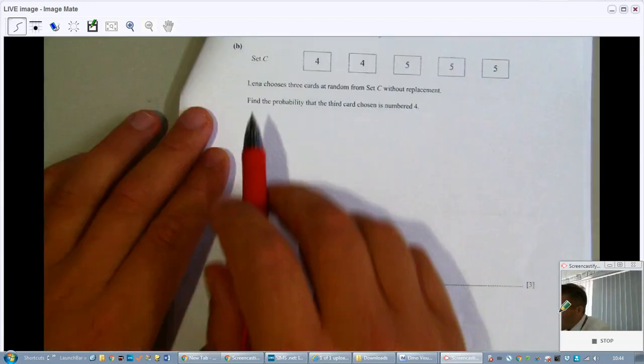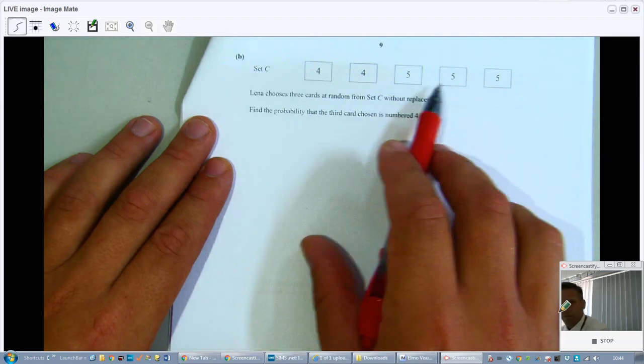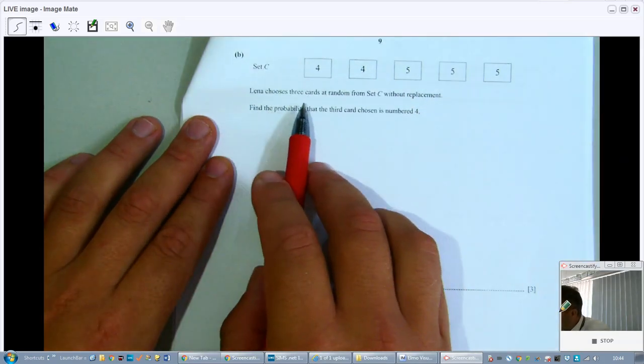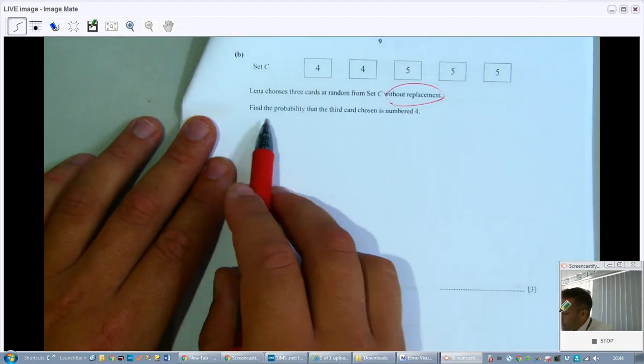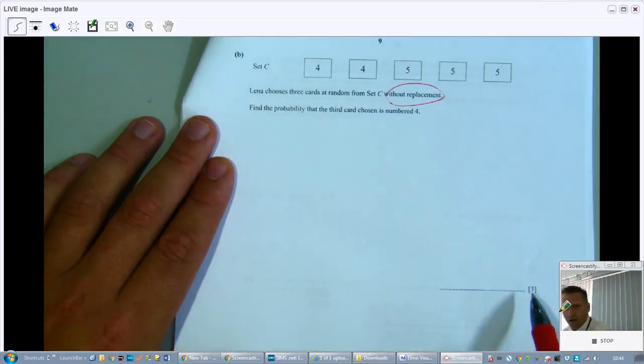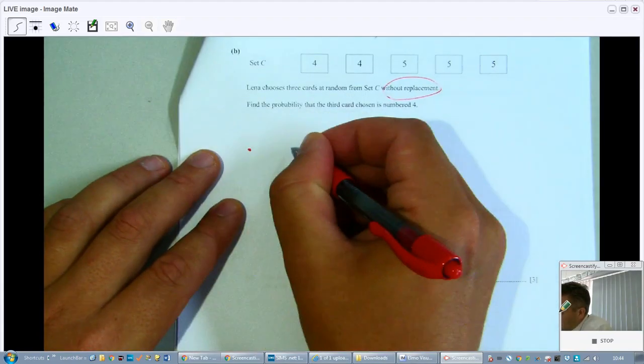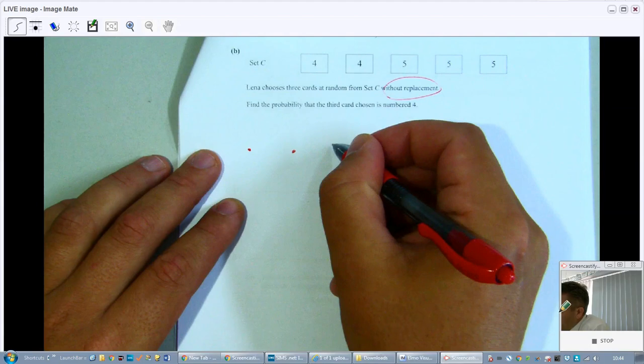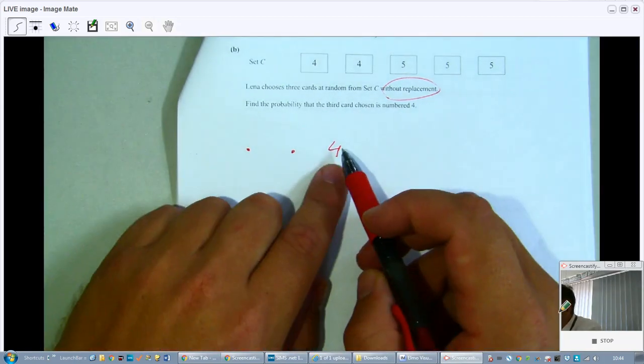So let's continue. We have a new set C with different cards: a 4, a 4, a 5, a 5, and a 5. And Lina chooses three cards at random from set C without replacement. Find the probability that the third card chosen is number 4. Okay, for three points so we get some time. So the first two cards, it doesn't matter what the cards are as long as that third one is a 4. You could make a tree diagram but you could also make a sample space diagram. What are the possibilities?